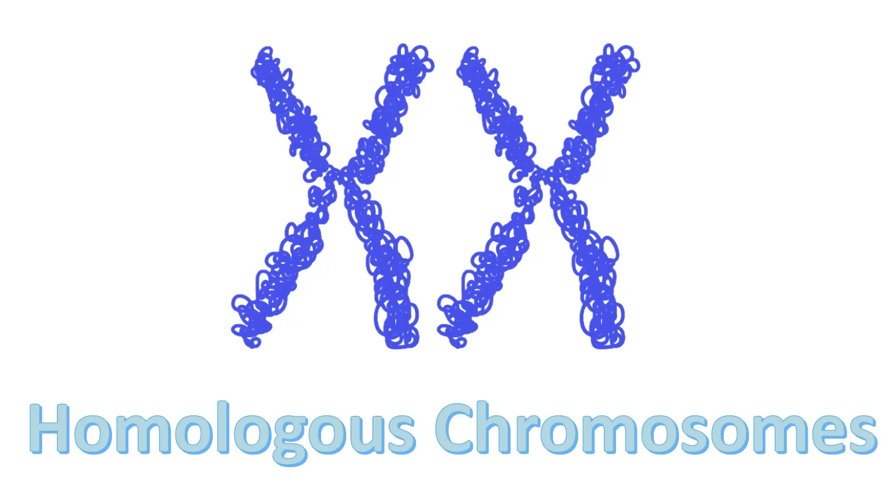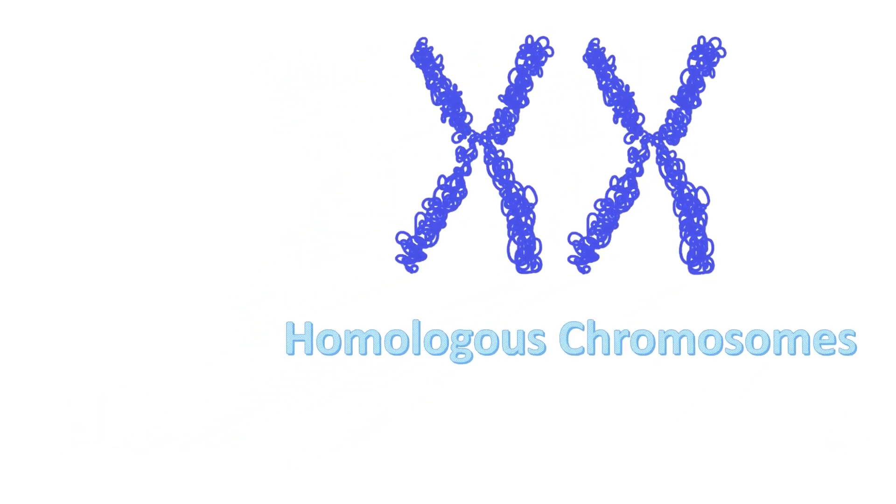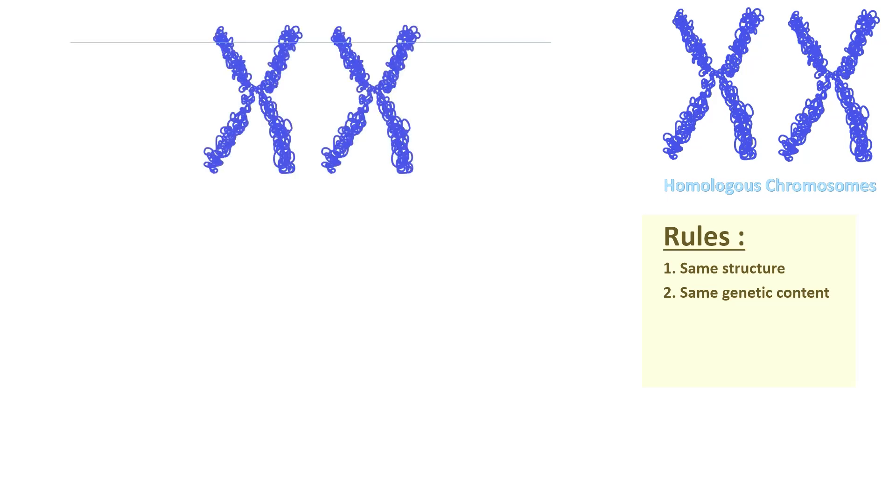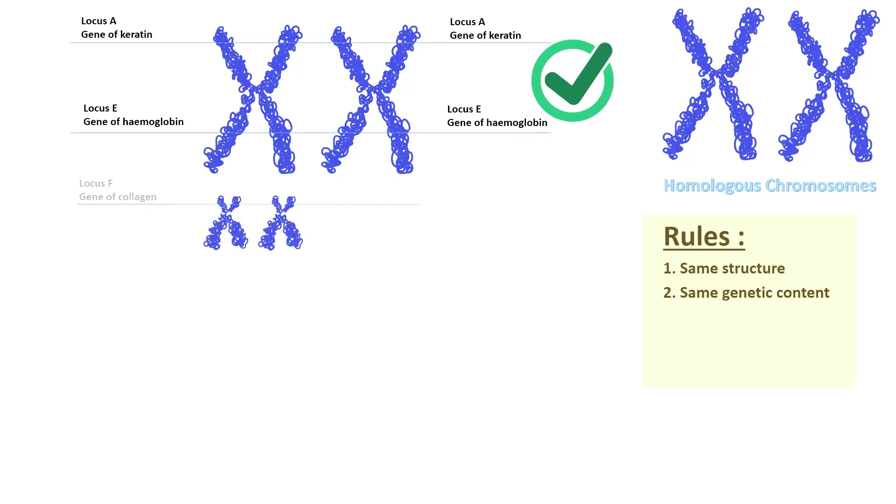Homologous chromosomes refer to a pair of chromosomes that have the same structure and also the same genetic content. For example, this pair is considered as homologous chromosomes. This pair is also considered as homologous chromosomes.